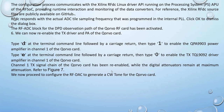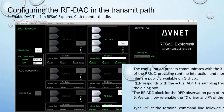We can now re-enable the TX driver and power amplifier of the CORBO card. Using the TQL script, type T at the terminal command line followed by carriage return, then type 1 to enable the power amplifier in channel 1 of the CORBO card. Type E at the terminal command line followed by carriage return, then type 0 to enable the TQL909 driver amplifier in channel 1. Channel 1 TX signal chain of the CORBO card has been re-enabled while the digital attenuation remains at maximum attenuation.